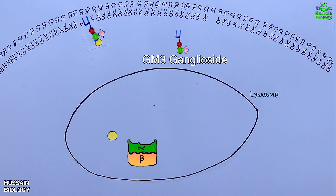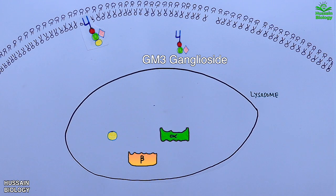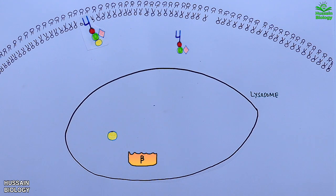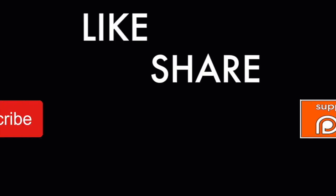This is how we get the lysosomal metabolism of GM2 ganglioside. It must be noted that if hexosaminidase A enzyme is absent due to mutation, we get Tay-Sachs disease — which we are going to discuss in the next video.